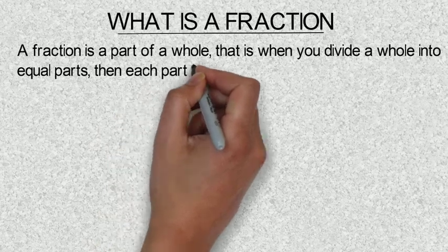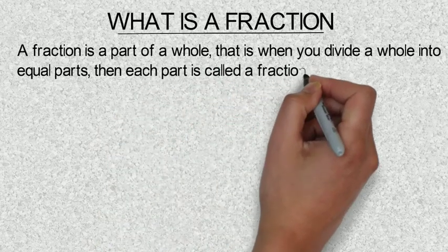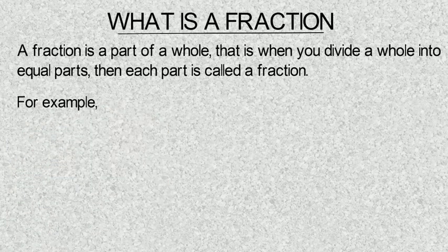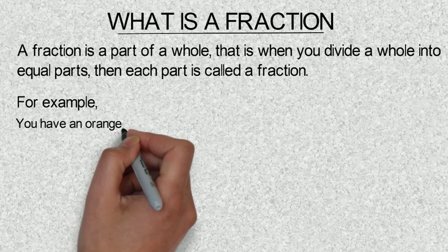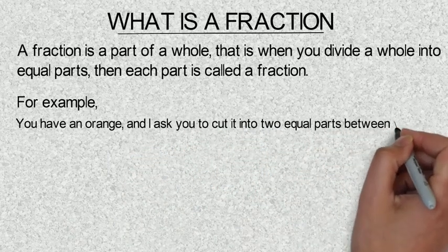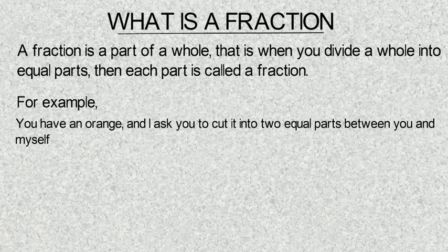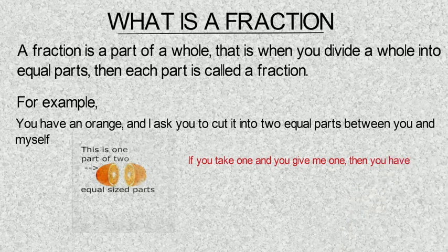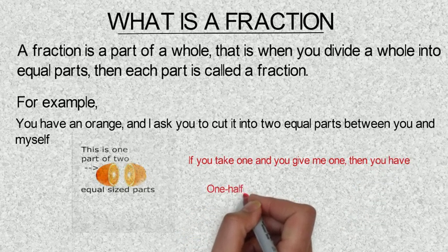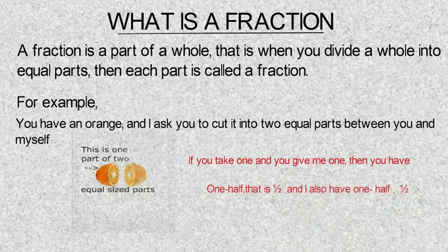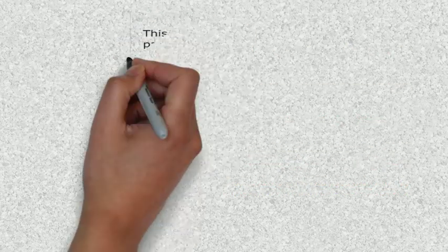For example, you have an orange and I ask you to cut it into two equal parts between you and myself. If you take one and you give me one, then you have one half, that is one over two, and I also have one half which is also one over two. Look at the diagram.